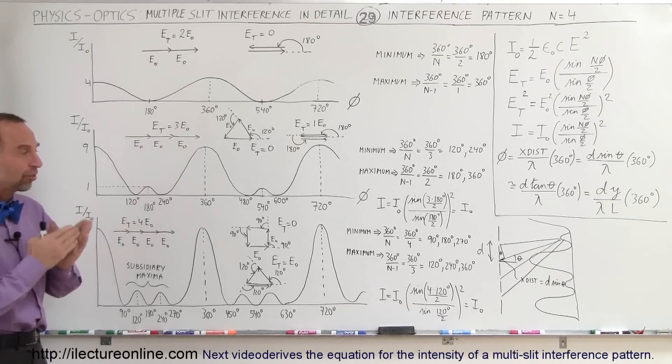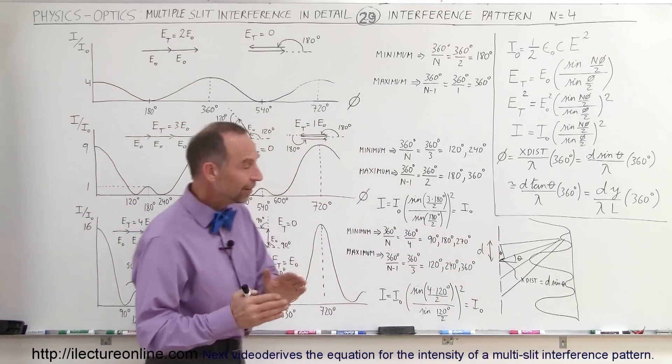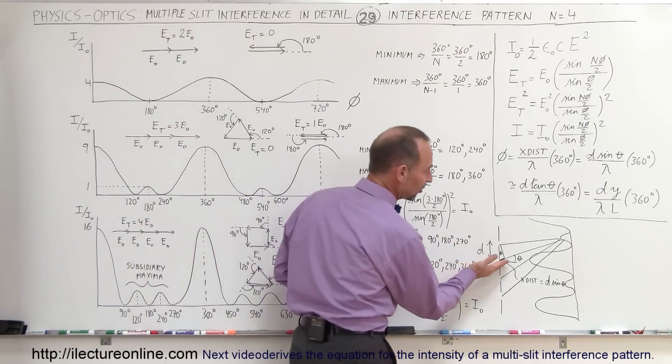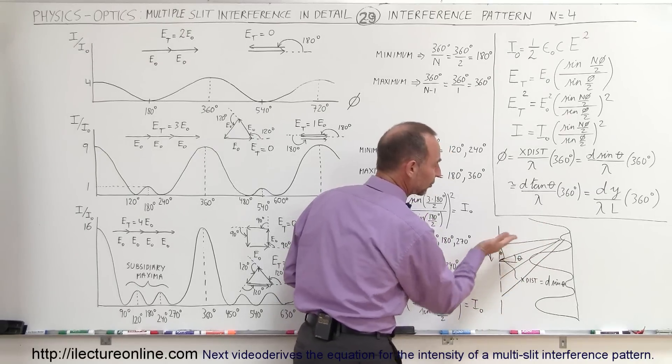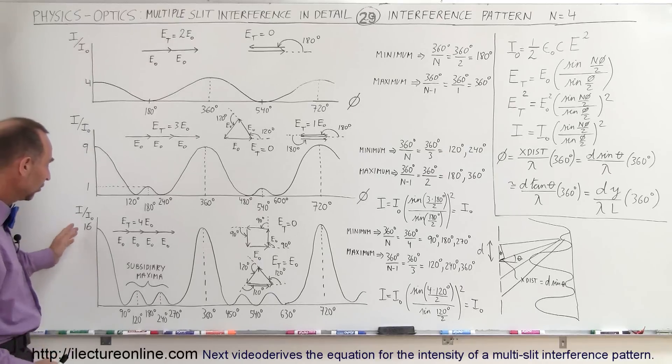Now here we have four slits adjacent. The distance between the slits is still the same, and depending upon how much extra distance each phase has to travel relative to the one right next to it, we're going to end up in an interference pattern that now looks like this.